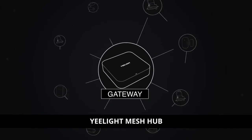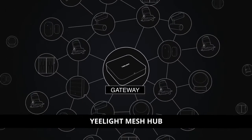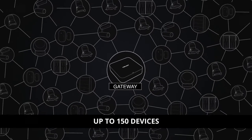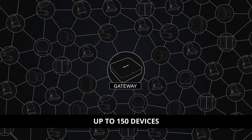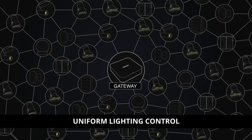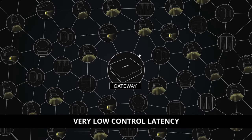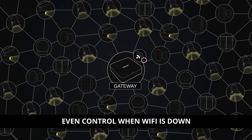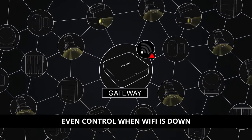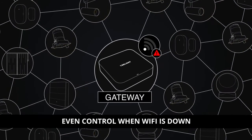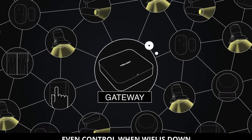Yelight Pro lights connect using mesh technology to a single gateway which supports up to 150 devices. This allows for uniform lighting control, with very low latency, and can even be controlled if your WiFi happens to be down.